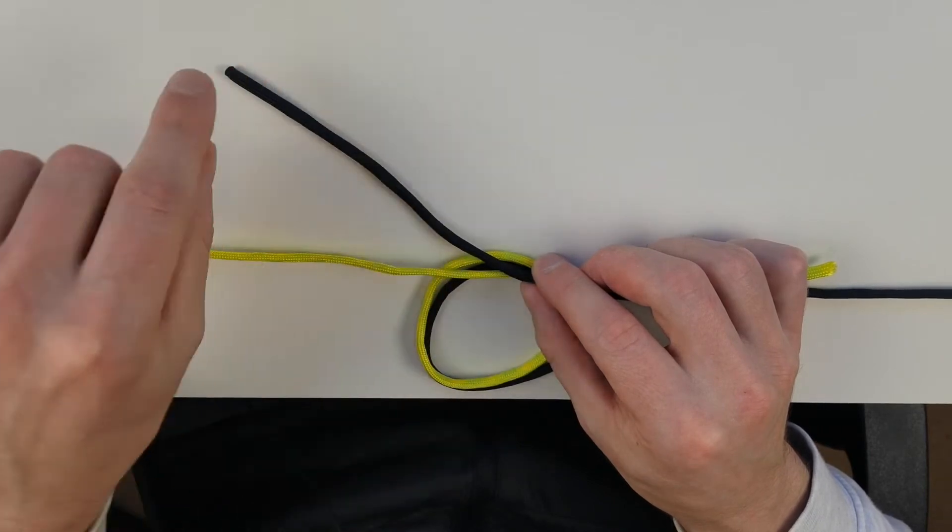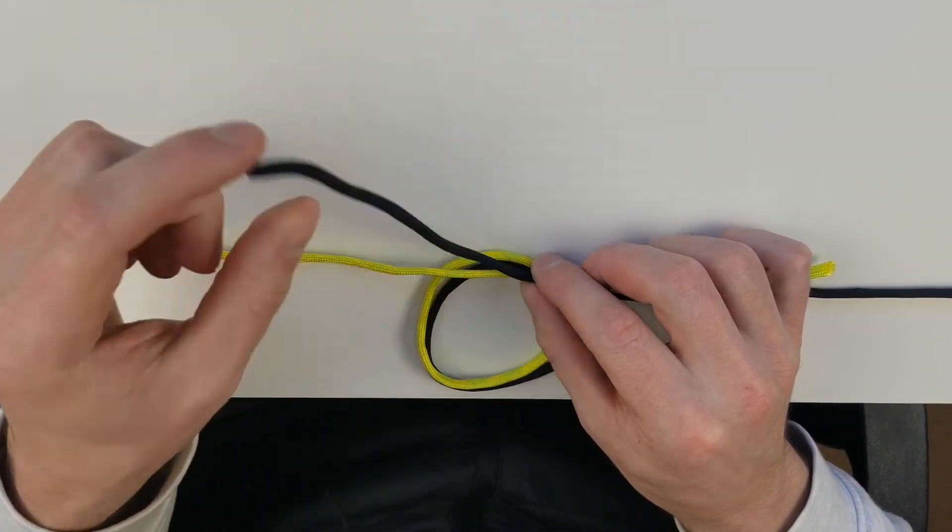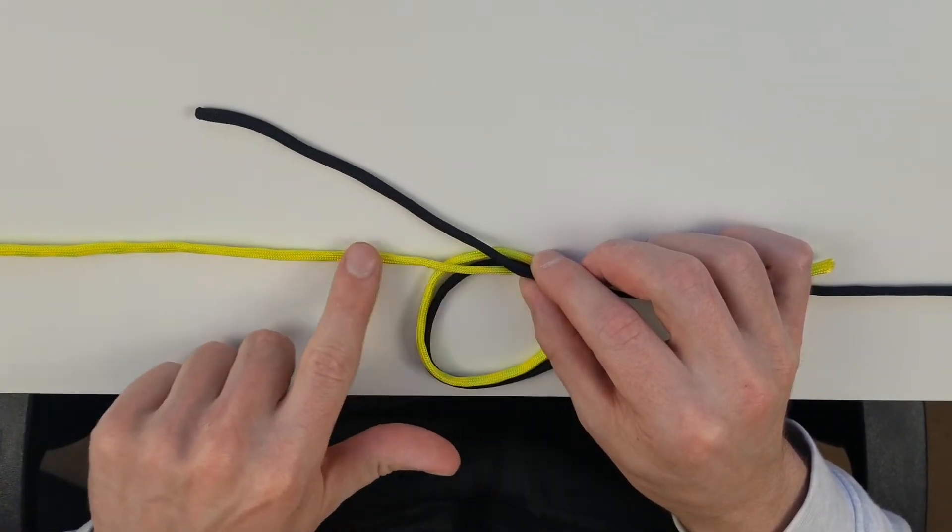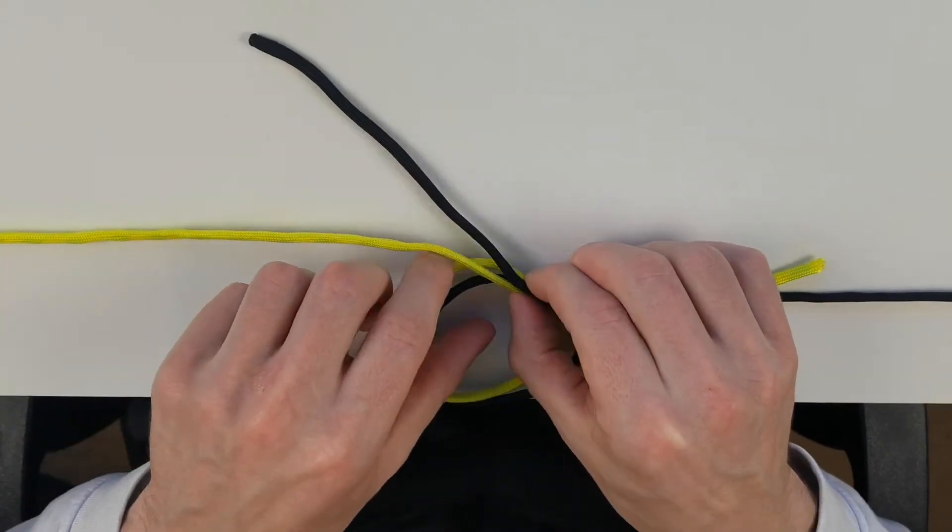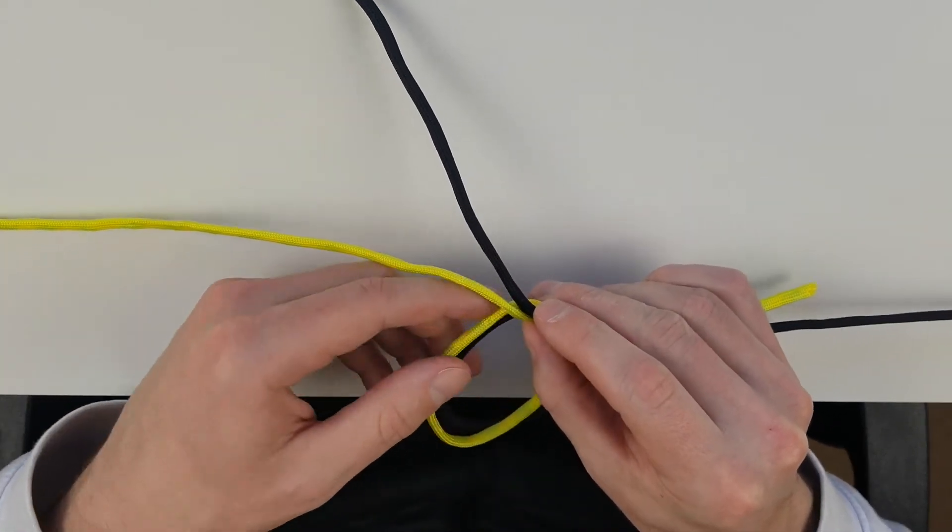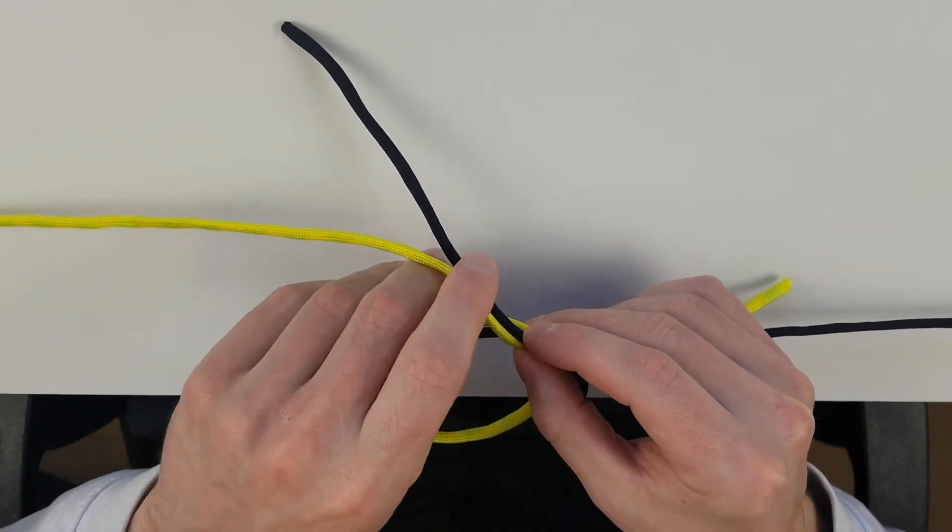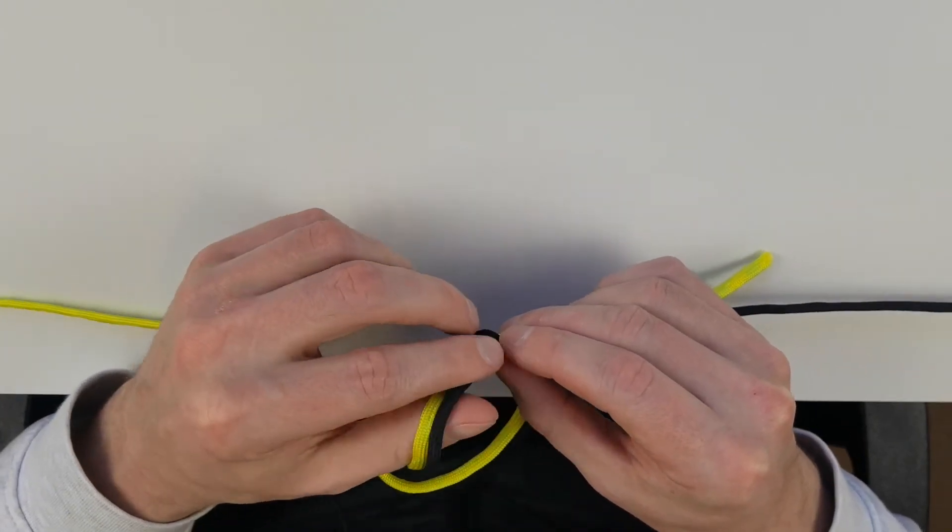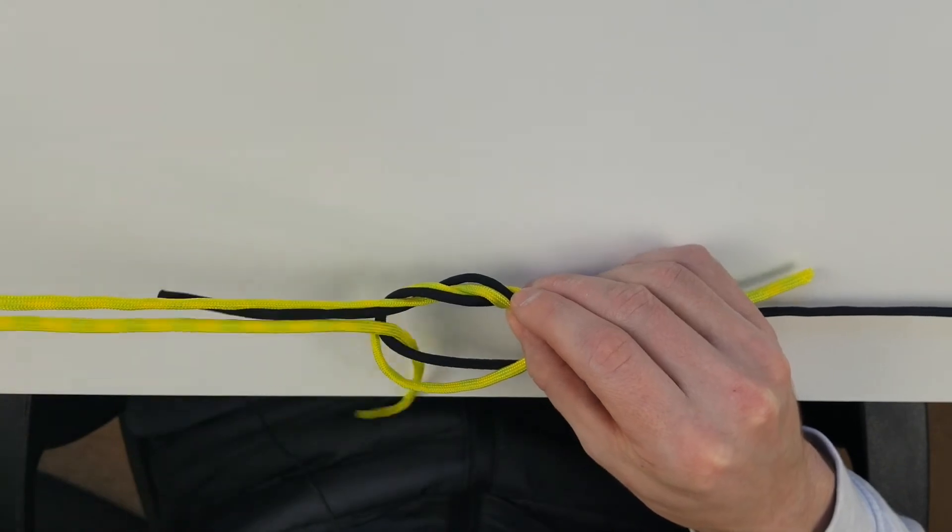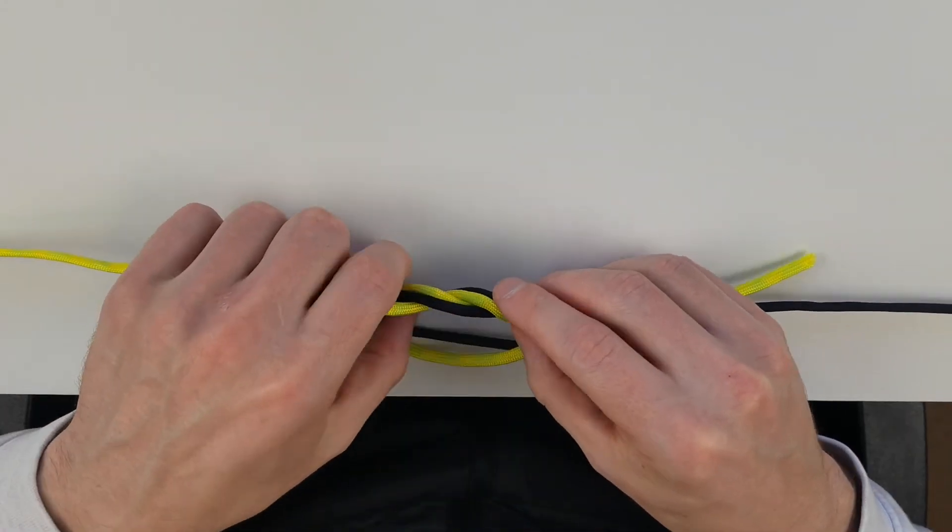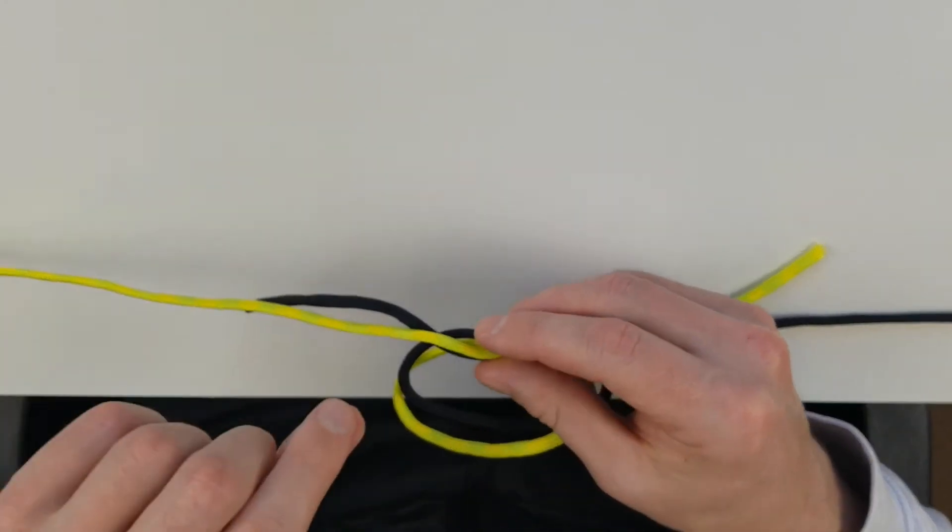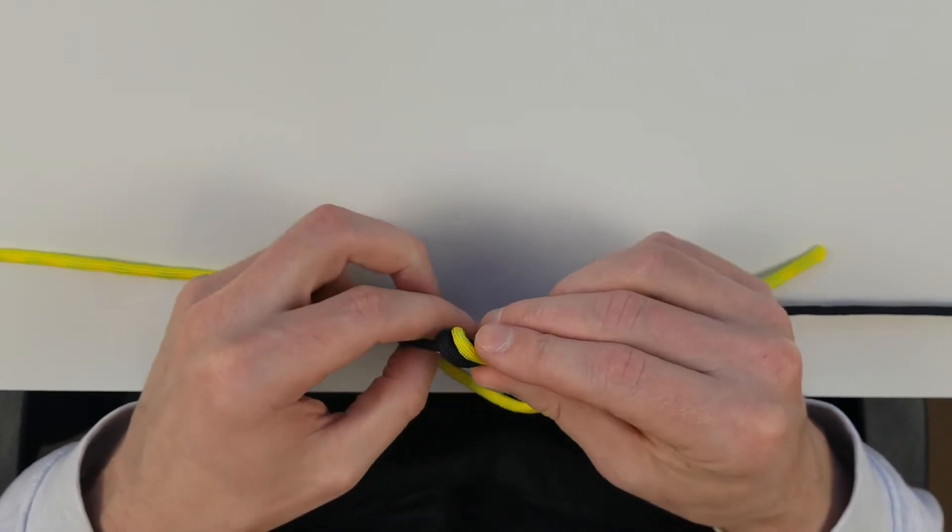All we're basically going to be doing is taking the tag end of our braid, which is right here, and the whole leader, and we're going to be wrapping them both around these strands of line here and coming up through the bottom. Pull the entire leader through, there's one. Then we're going to do that one more time, wrapping it around and coming up through the bottom, there's two.